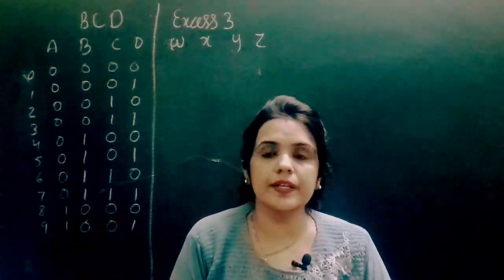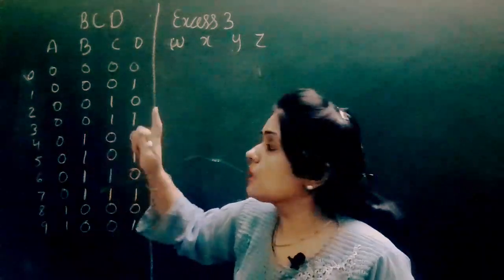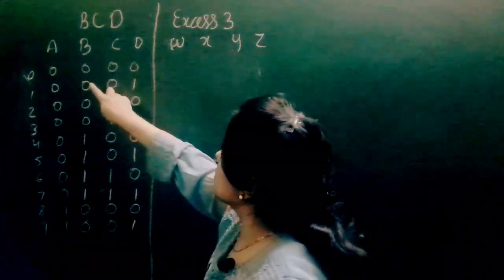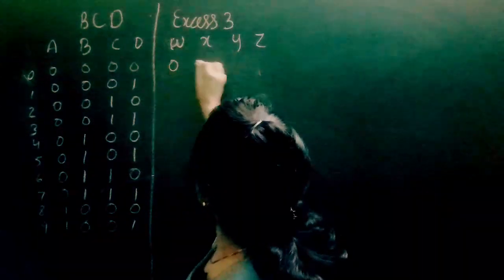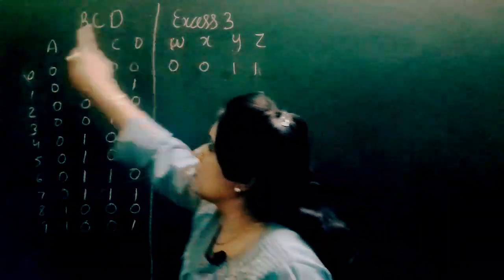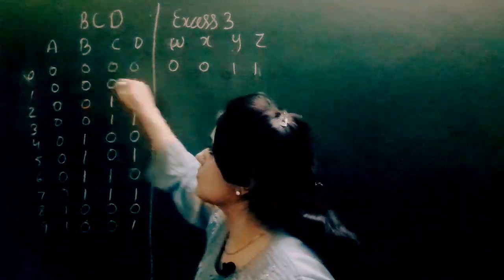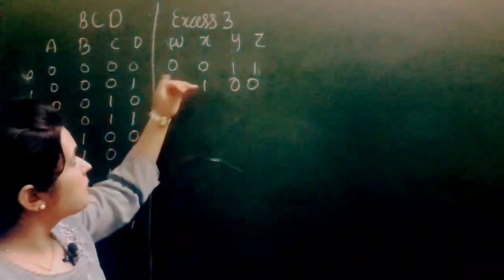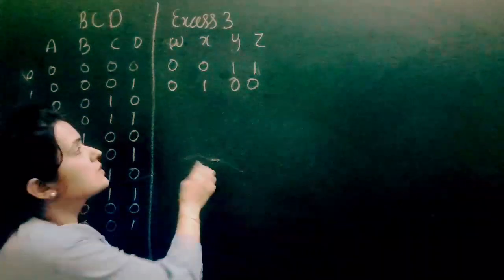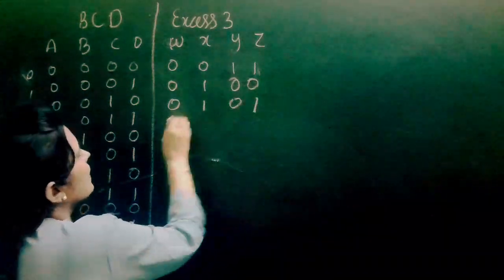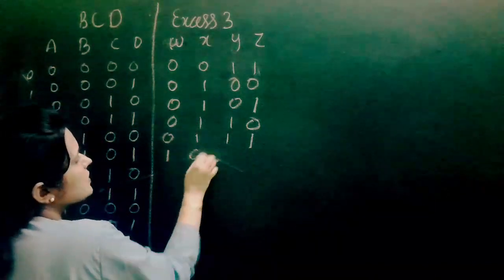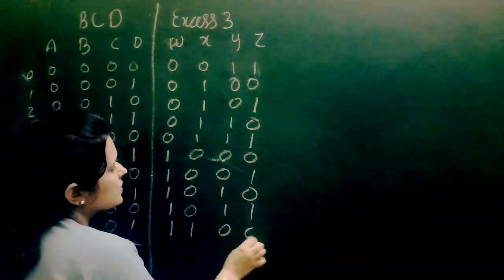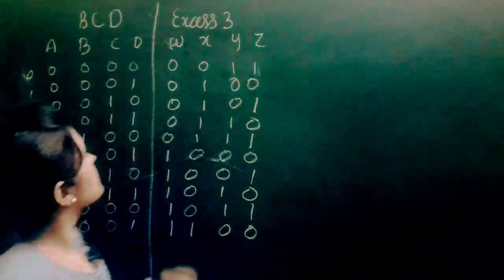Now what is XS3 code? XS3 is an unweighted reflected code which is obtained just by adding 3 to a given BCD number. So if I want to obtain the XS3 equivalent of 0, I add 3 to 0, giving 3, so 0000 plus 3 equals 0011. For 1, 1 plus 3 equals 4, so the code is 0100. For other numbers, I simply increment. So this is the XS3 code from 0 to 9 alongside the BCD code from 0 to 9.